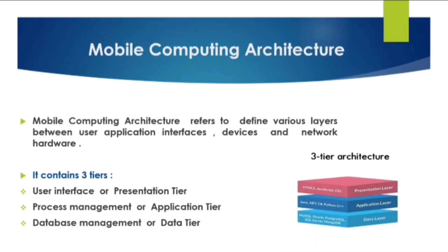Next we are going to see about mobile computing architecture. Mobile computing architecture refers to defining various layers between user application interfaces, devices, and network hardware. It contains three tiers: the first is the user interface, otherwise known as the presentation tier; the second is process management, otherwise called the application tier; and the third is database management, also called the data tier.